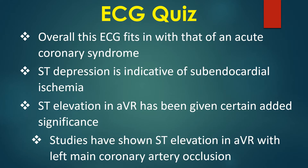Mild ST elevation is seen in AVR, marked by a black arrow, and V1, marked by a green arrow. Overall, this ECG fits with acute coronary syndrome. ST depression is indicative of subendocardial ischemia. ST elevation in AVR has been given certain added significance.